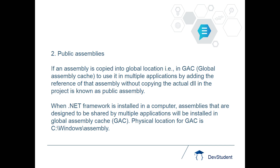Public assemblies are different — you have to copy the assemblies into a global location which is called GAC. The physical location of GAC is C:\Windows\Assembly. You have to place the DLL into that location and then it can be used by multiple applications, but you have to add a reference to this DLL in the application. When the .NET framework is installed on your computer, assemblies shared by multiple applications will be installed in that GAC location. To see already existing global or public assemblies, go to C:\Windows\Assembly and the DLLs will be present there.